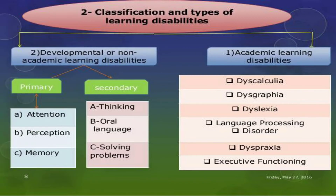You can see here the classification and types of learning disabilities. Normally we assess children based upon their academic performance. Based upon their primary attention, perception and memory, they have different types of disabilities. And based upon secondary thinking, their oral language, and problem solving, these disabilities can be further divided.